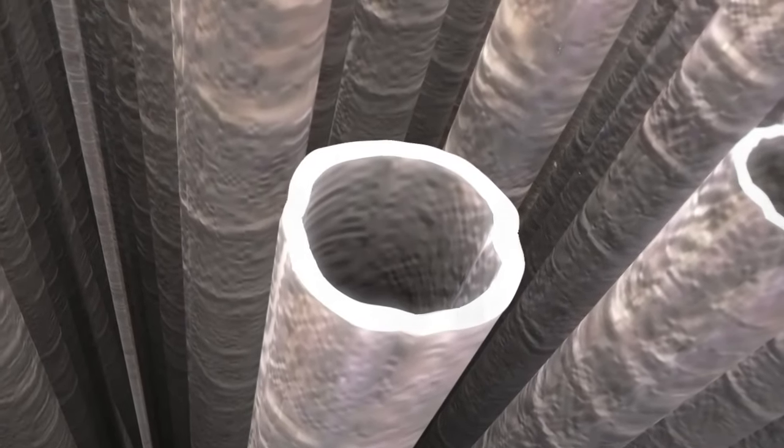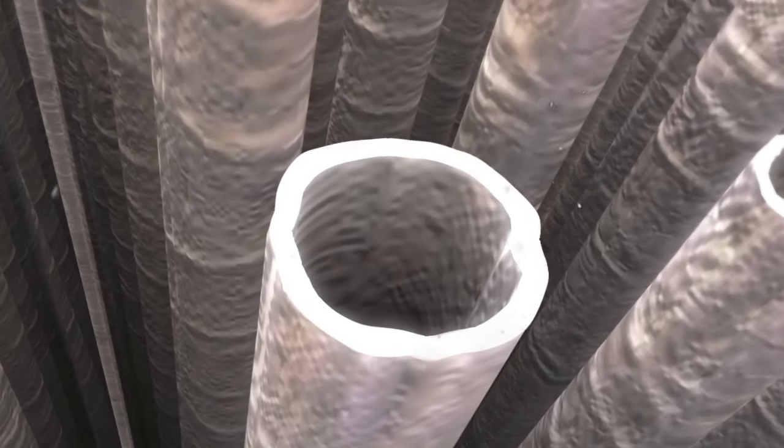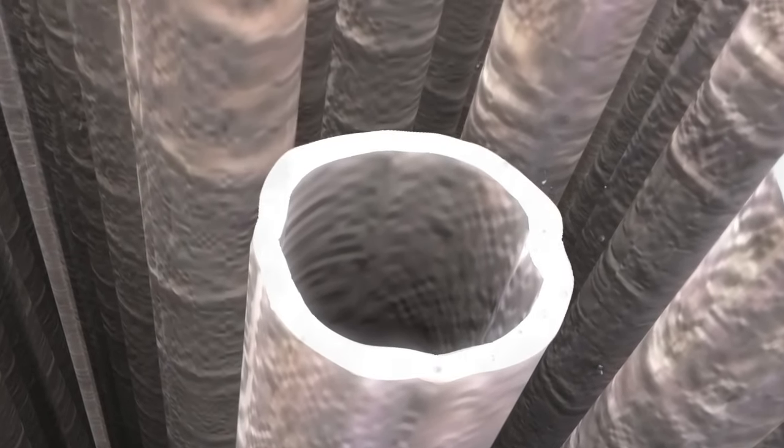The membranes are structured like tiny drinking straws. This provides an unprecedented amount of surface area where the CO2 will selectively permeate.